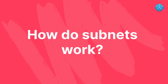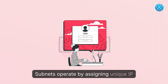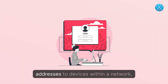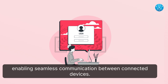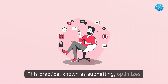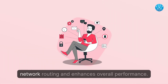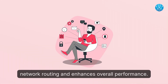How do subnets work? Subnets operate by assigning unique IP addresses to devices within a network, enabling seamless communication between connected devices. This practice, known as subnetting, optimizes network routing and enhances overall performance.